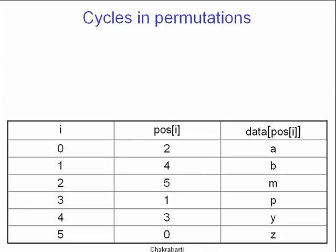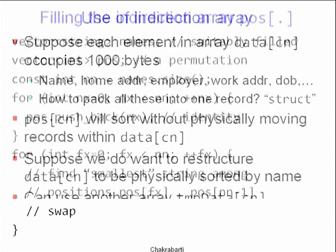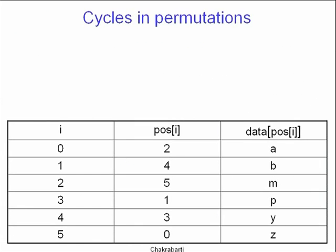Let's recap the last part: forming the indirection array and sorting the original data array in place. We had indices 0 through 5, and data was as shown. Once we compute the pause array — pause[0]=2, pause[1]=4, and so on — if you indirect through the pause array into the data array, the result is sorted from A to Z.